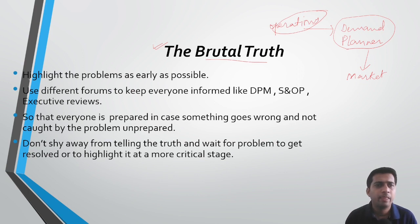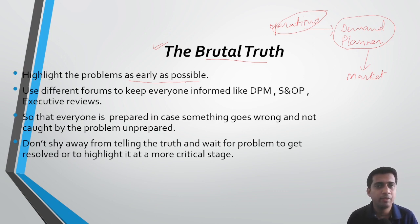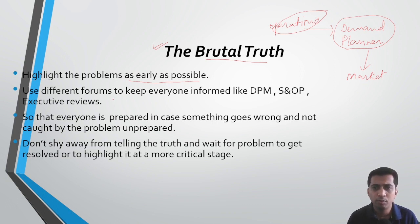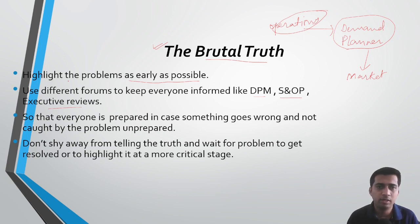What you need to do in such situations is highlight the problems as early as possible. If you see any problem likely to happen in your supply chain, highlight it to the team — expected loss of sales, capacity losses, anything. Highlight it in different forums: your demand planning meetings, your S&OP calls, your executive reviews. Keep everyone informed about what you are seeing and what may happen.